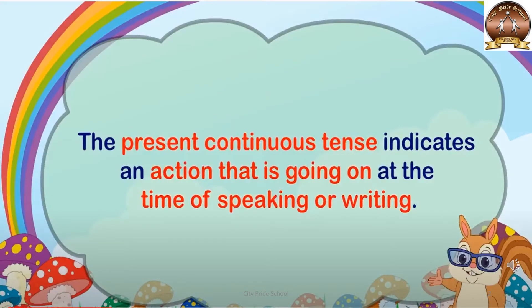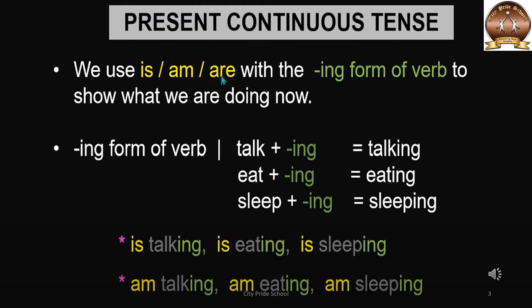Let us understand what present continuous tense is. It means the action which is going on at the time of speaking or writing. In present continuous tense, we use is, am, and are with the ing form of the verb to show what we are doing now.